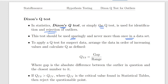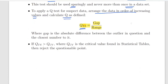To apply a Q test for suspect data, arrange the data in ascending order and calculate the test statistic as follows. The test statistic Q_TS is the gap divided by the range. This is probably the first time people will come across this notion of a test statistic. Q_TS stands for test statistic, and it is a metric for the strength of evidence for the hypothesis test you are going to apply.